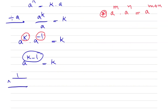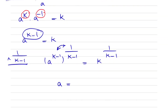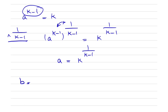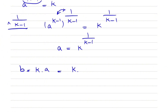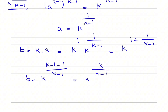We raise both sides to the power of 1 over k minus 1 to isolate a, giving us a equals k to the power of 1 over k minus 1. Remember, b was defined as k times a, so b equals k times k to the power of 1 over k minus 1. Combining the exponents using a common denominator, b equals k to the power of k over k minus 1. So our solutions are a equals k to the power of 1 over k minus 1, and b equals k to the power of k over k minus 1.